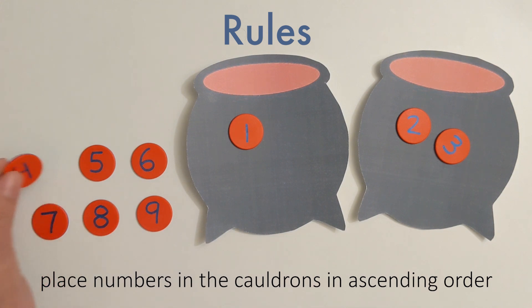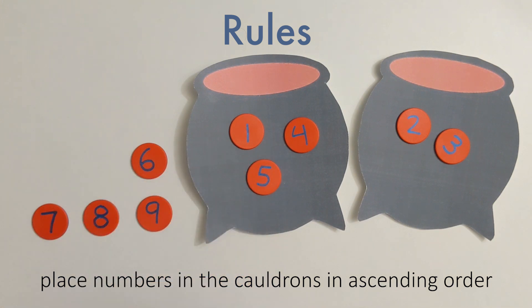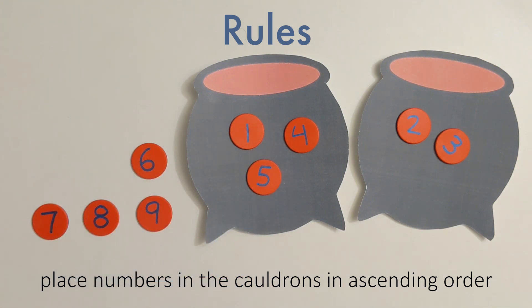4, I'll place this one in my cauldron to the left, and I'll place 5 there as well. This is a good time to talk about our second rule.